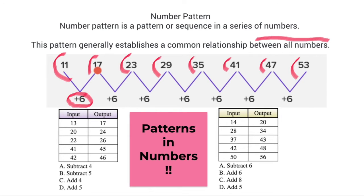So 11 plus 6 is equal to 17, 17 plus 6 is equal to 23, 23 plus 6 is 29, 29 plus 6 is 35, 35 plus 6 is 41, 41 plus 6 is 47. That is the sequence — from one number to another is plus 6. We have two more example boxes here.